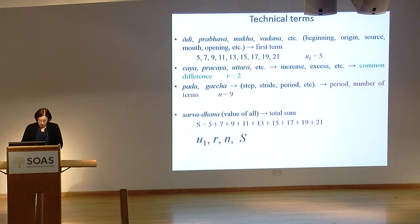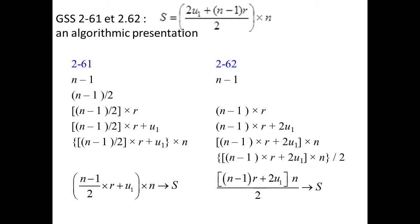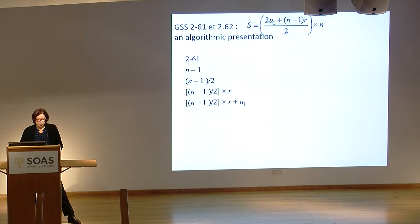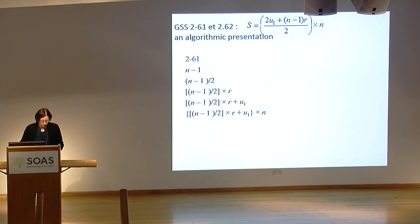With these four quantities, usually we know three of them, and there are formulas which allow us to find the fourth one. Let's see the calculation of the total sum. At the time of the GSS there was no algebraic notation, so it's an algorithmic presentation. You take n, remove one, divide by two, multiply by r, add the first term, and multiply by the number of terms. You will get the sum if you do these calculations in the proper order. Another option gives exactly the same result.